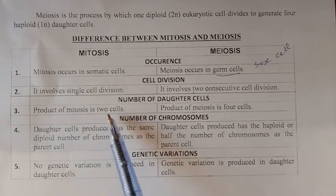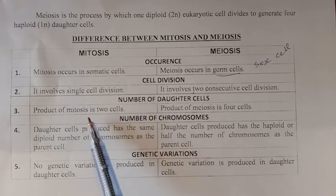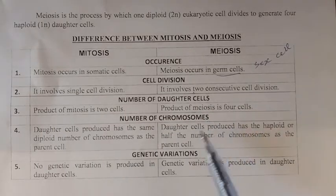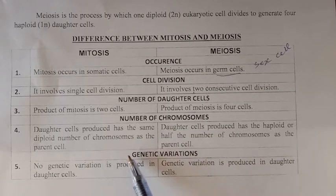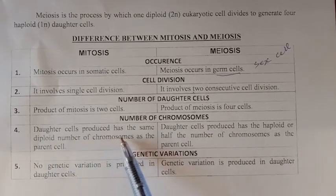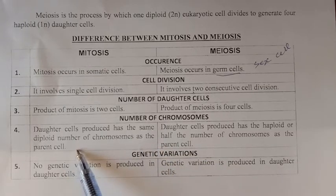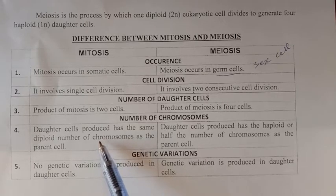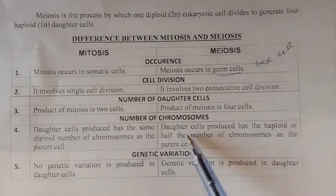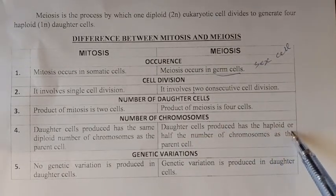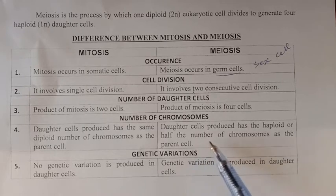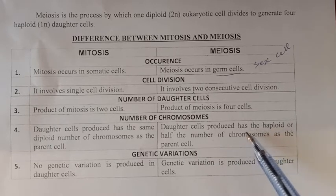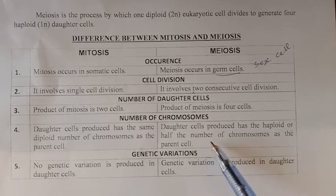In mitosis, the parent cell divides into two daughter cells, while in meiosis the parent cell divides into four daughter cells. In mitosis, the daughter cells contain the same diploid number of chromosomes as the parent cell — for example, 46 in humans — while in meiosis, each of the four daughter cells contains 23 chromosomes, which is the haploid number.